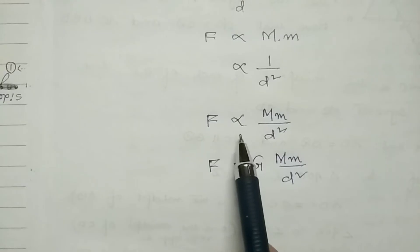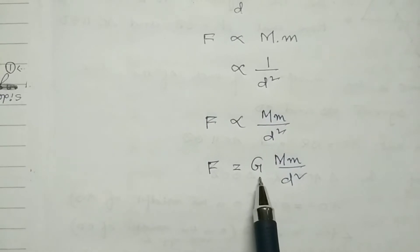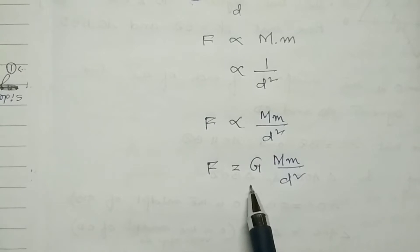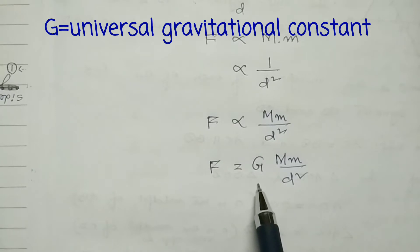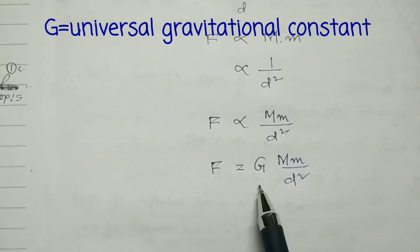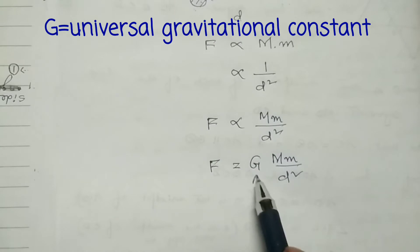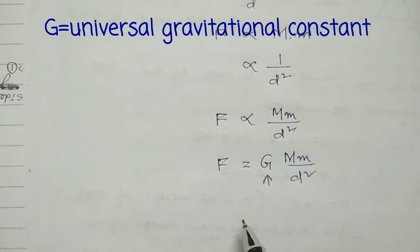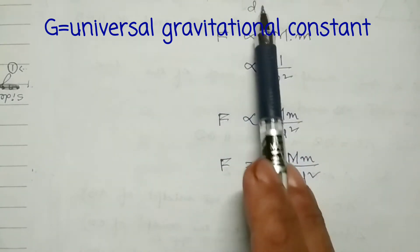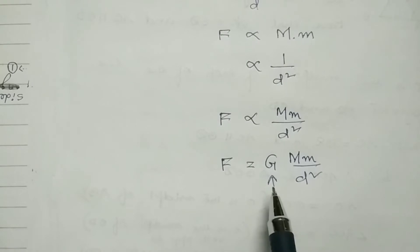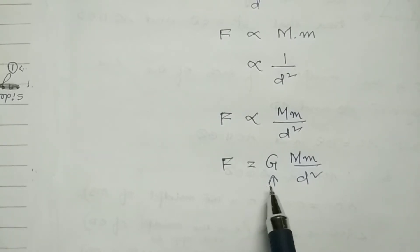If I replace the proportional symbol by an equal sign, I have to bring in one constant. This G is called the constant of proportionality, also commonly called the universal gravitational constant. The value of this constant G is not dependent on the masses, the distance between the objects, or what type of medium is in between. So it is always a constant — whatever may be the material, mass, or distance, the value of G is not going to change.